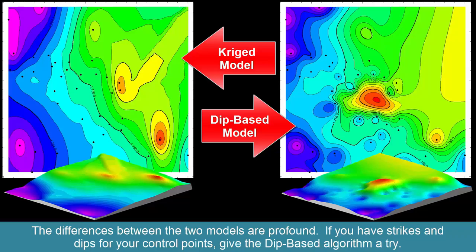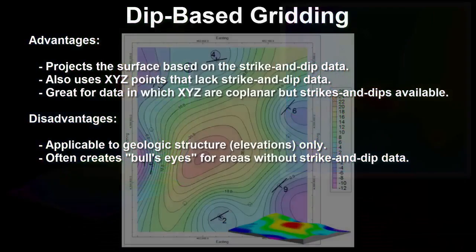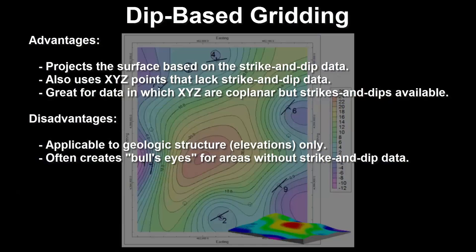If you have strikes and dips for your control points, give the dip-based algorithm a try. Advantages: dip-based gridding projects the surface based on strike and dip data, it also uses XYZ points that lack strike and dip data, and it's great for data in which XYZ are coplanar but strikes and dips are available. Disadvantages: it's applicable only to geologic structure or elevations, and it often creates bullseyes for areas without strike and dip data.